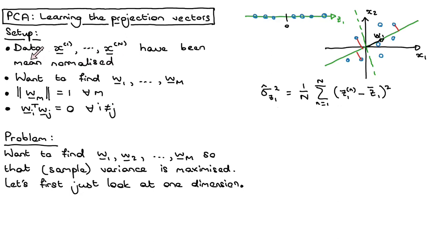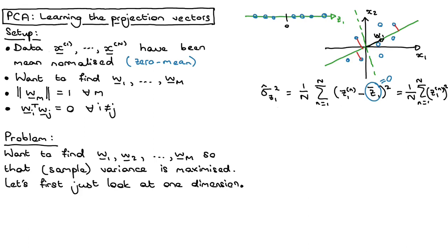Since we assume the data has been mean normalized, the XNs are zero mean. If that's true, you can convince yourself that the means of the projections will also be zero — if you project linearly, the mean of the projections will also be zero. So that subtracted mean term is just zero. This means we can write the sample variance as just 1 over N times the sum of Z1N squared. But like I said, there's still no W1 in there, so we need to fix that.